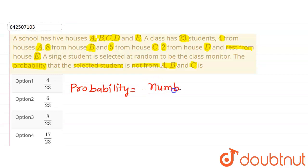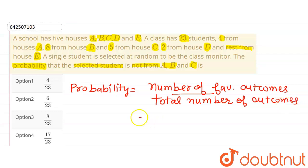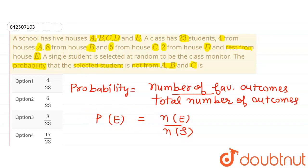We know that probability is equal to the number of favorable outcomes divided by the total number of outcomes. The number of favorable outcomes for an event are denoted by N(E), the total number of outcomes are the elements of the sample space denoted by N(S), and the probability of an event happening is denoted by P(E).